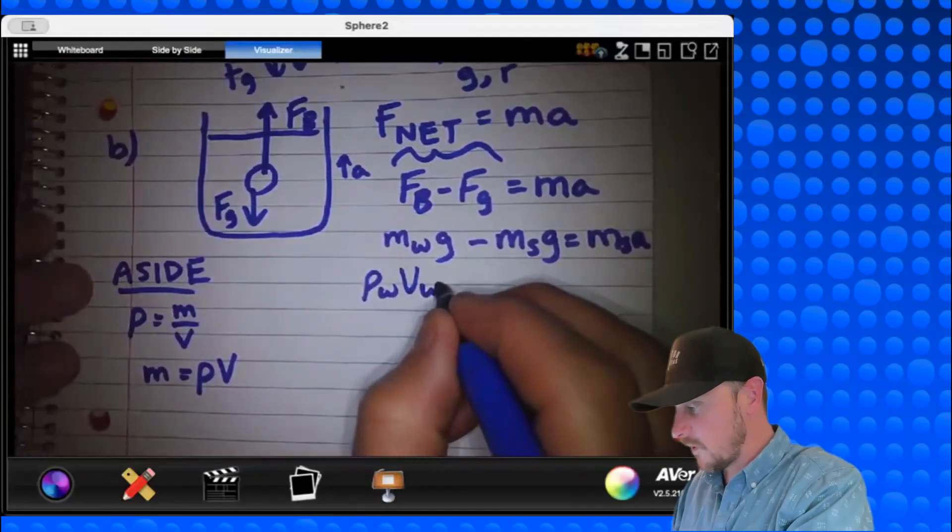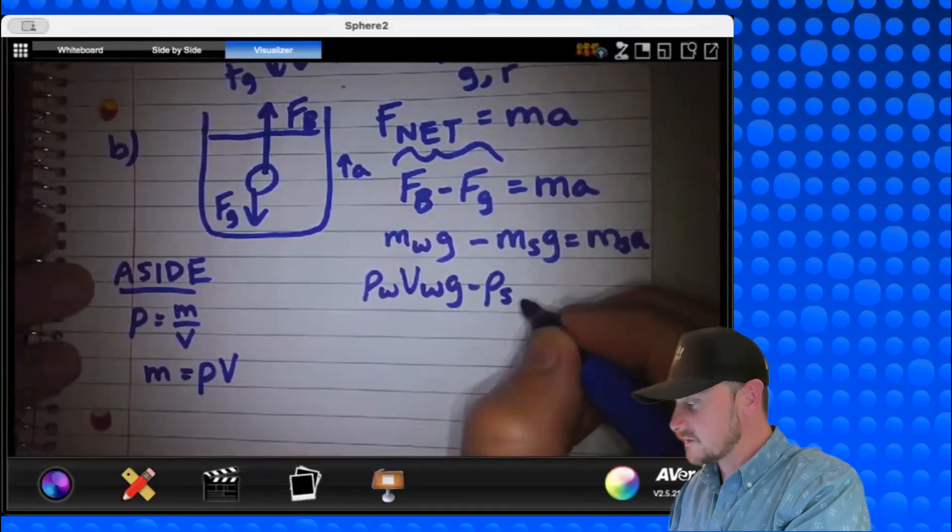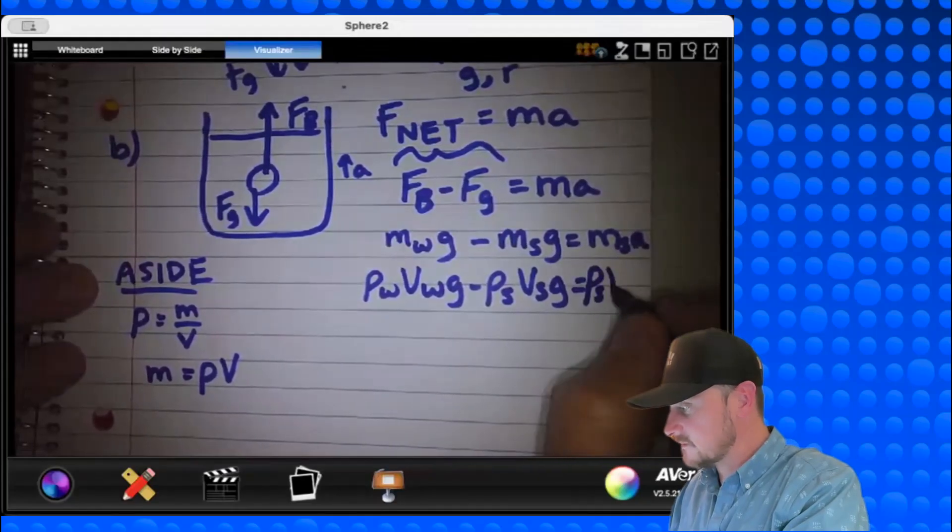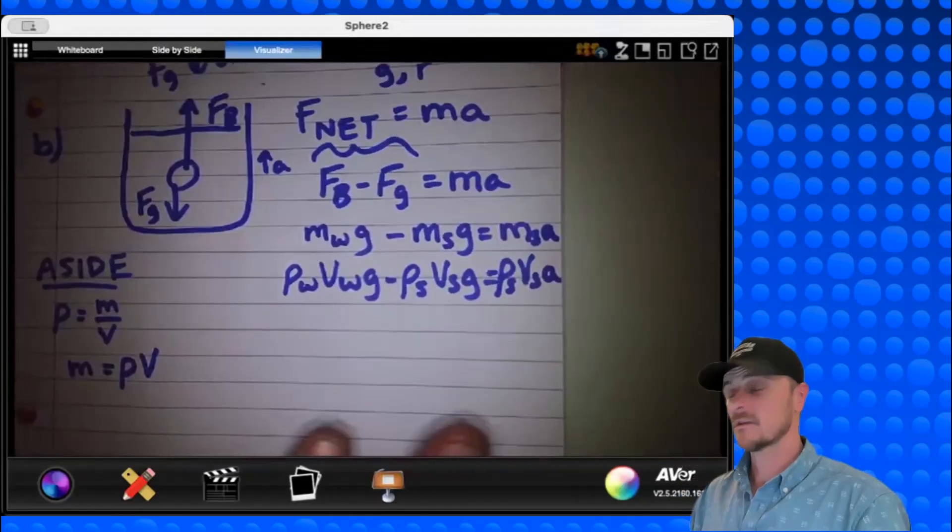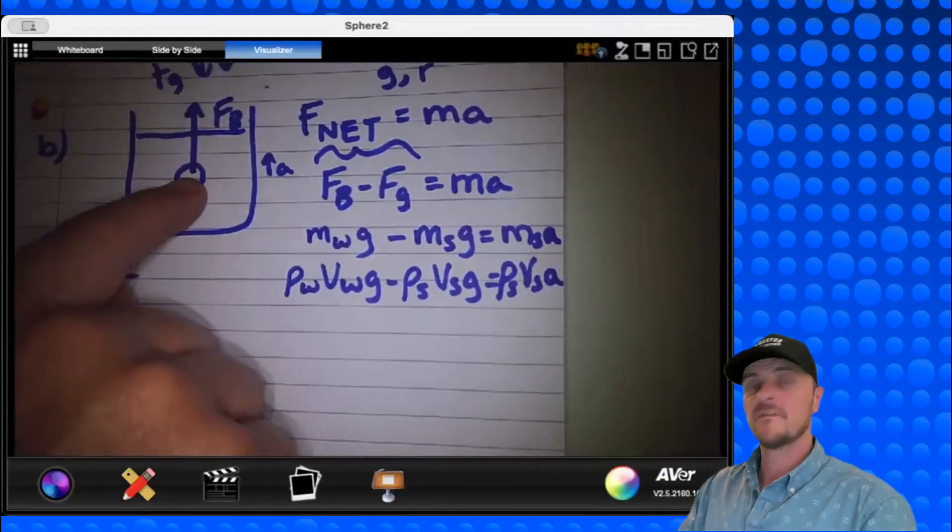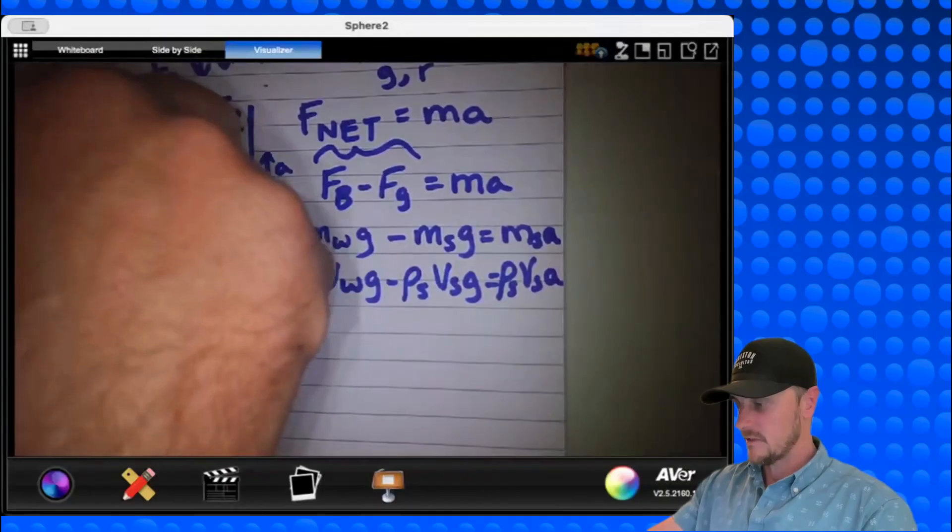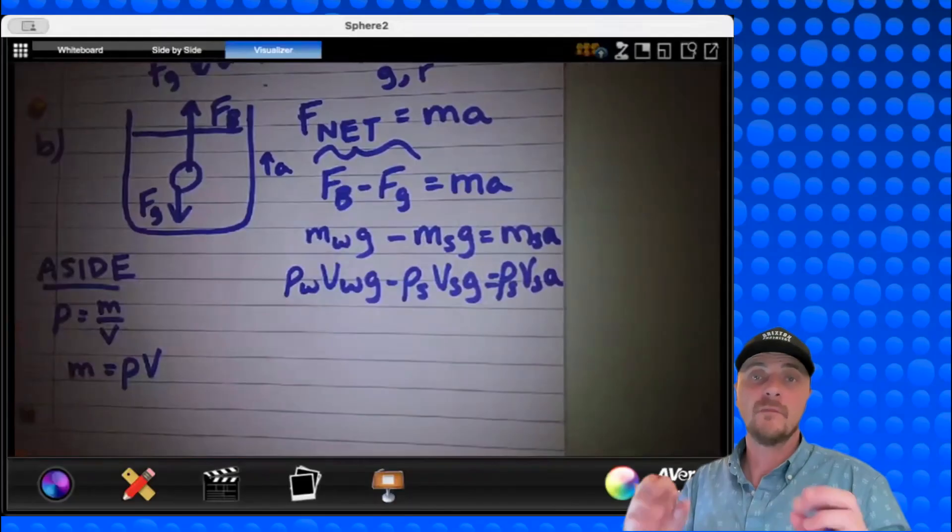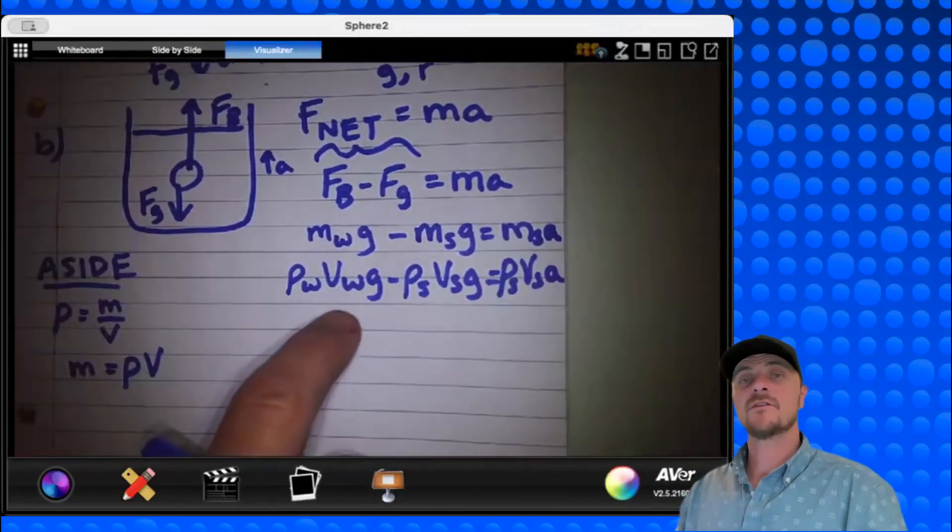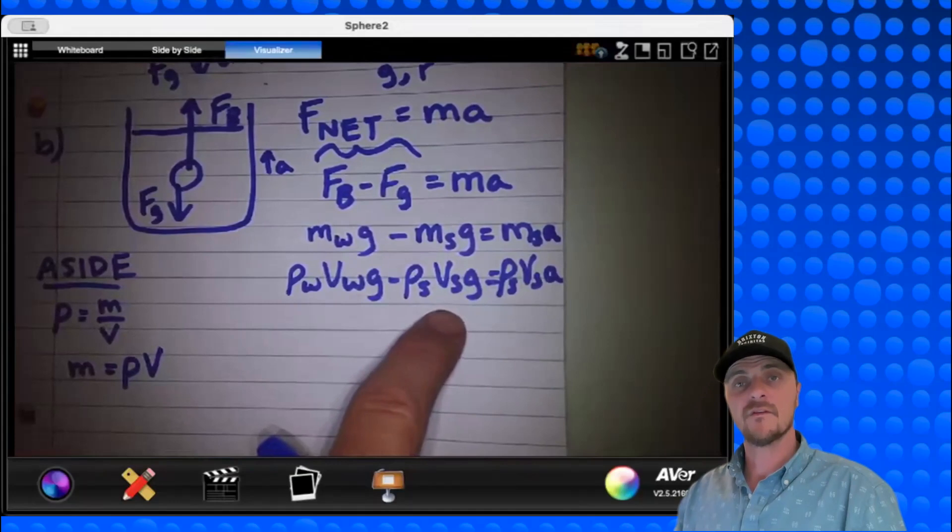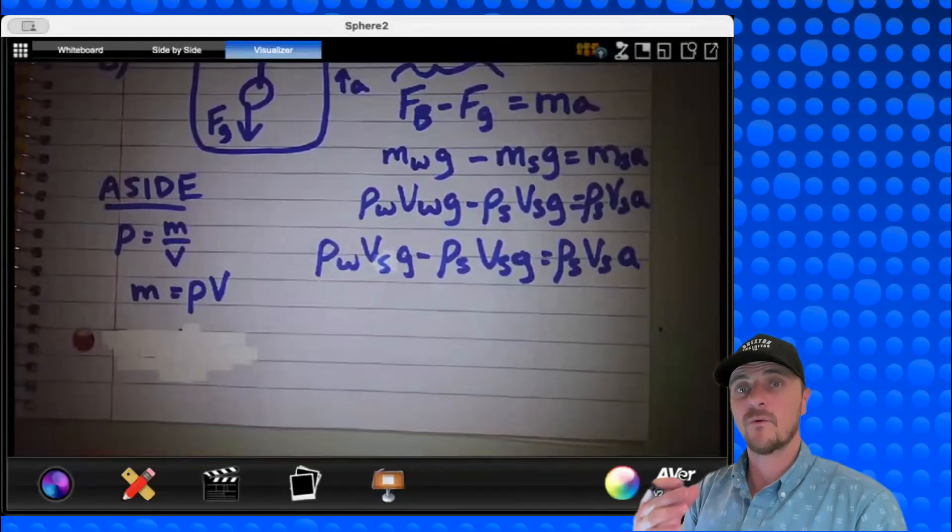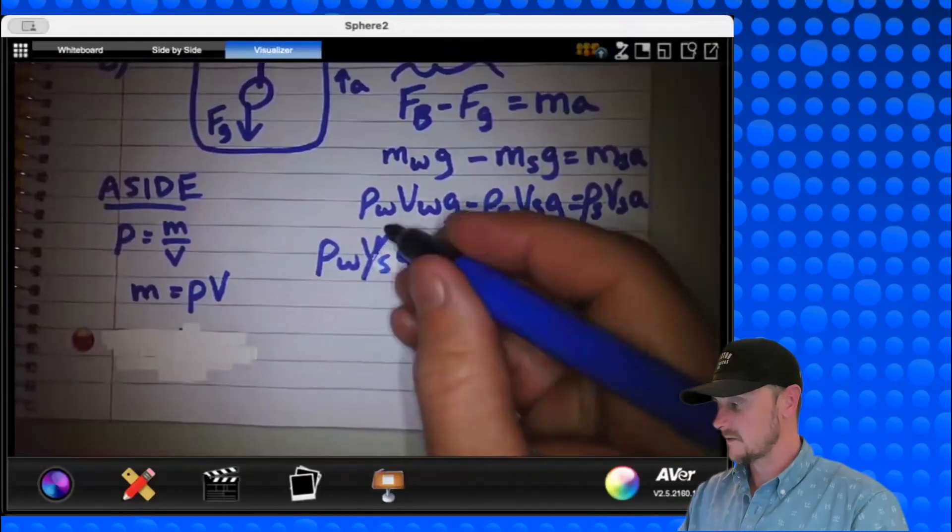Density of the water times volume of the water times g, minus density of the sphere times volume of the sphere times g, equals density of the sphere times volume of the sphere times a. Just like that. And there's some things to realize here. The volume of the sphere is the volume of the water that's been displaced. If this sphere goes into the water, it's going to push aside a certain volume of water that is equal to the volume of the sphere. Therefore, I can make a substitution for the volume of the water to be volume of the sphere, leading to this expression right here. Now before you try to plug in for the volume of the sphere, which would be four-thirds pi r cubed, notice that every single term has V_s. So that means it will cancel out. And you're left with a much simpler equation.